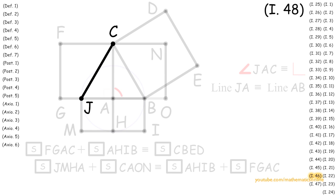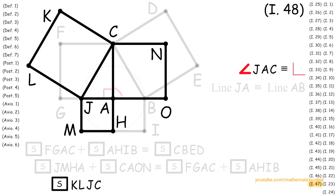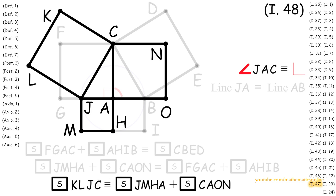Next, with line JC, we apply Proposition 46 one last time to construct a square. Now remember that angle JAC is a right angle. And in Proposition 47, we prove that with any right triangle, the sum of the two smaller squares is always congruent to the square opposite the right angle. Therefore, square KLJC must be congruent to square JMHA plus square CAON.